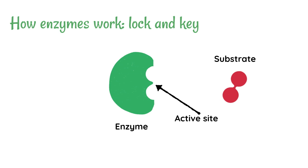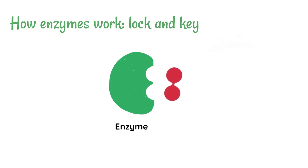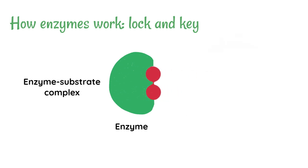We just explained that amylose gets broken down by amylase. In that example, amylose, or starch, would be an example of a substrate. What happens is the substrate will join with the active site, and when this happens, we describe this whole thing as the enzyme-substrate complex.